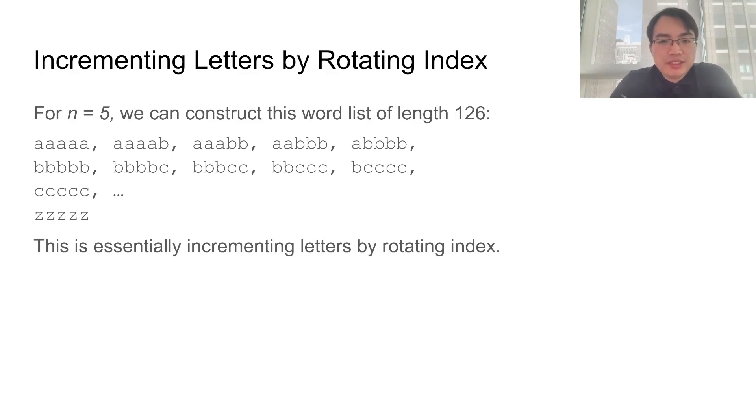This will generate a word list of exactly 126, and what we are doing here is incrementing each letter, but we are rotating the index of the letter that is being incremented.